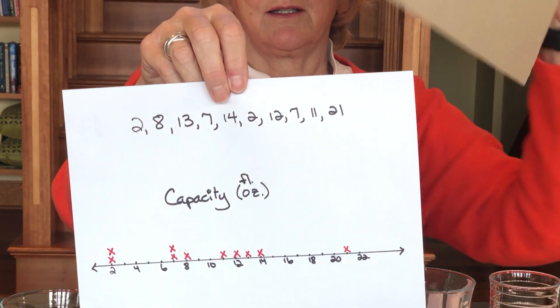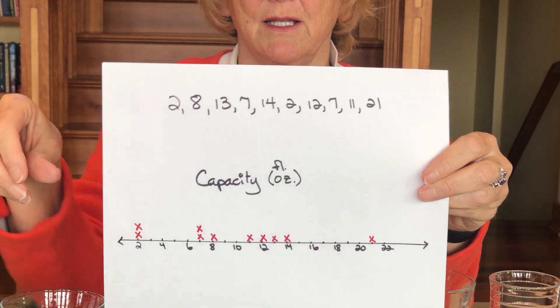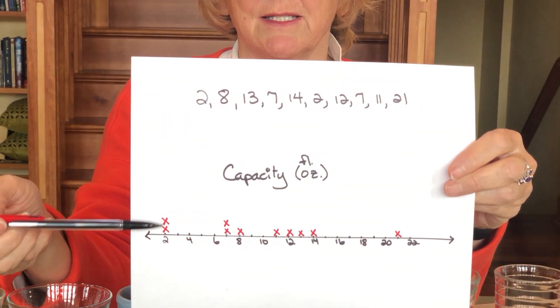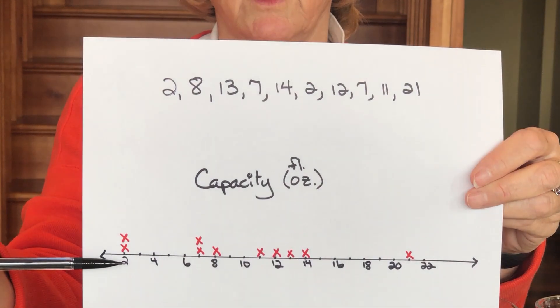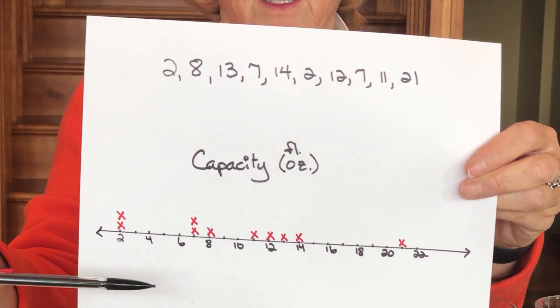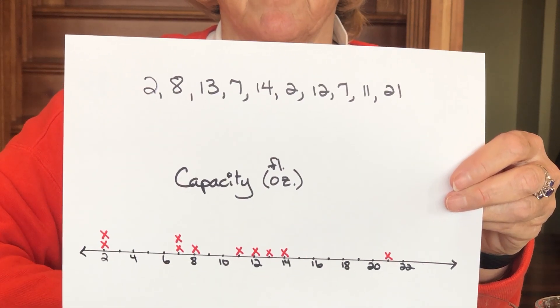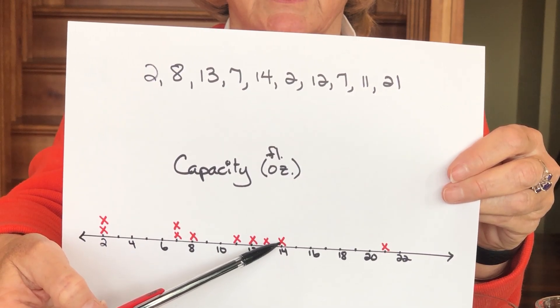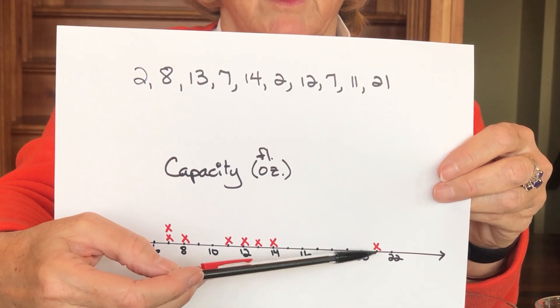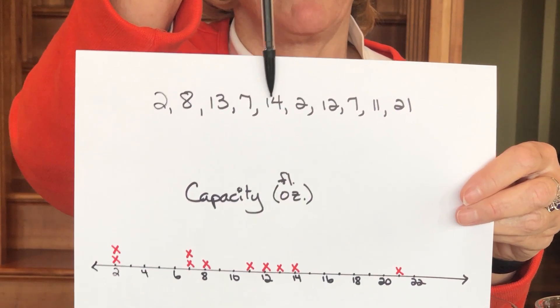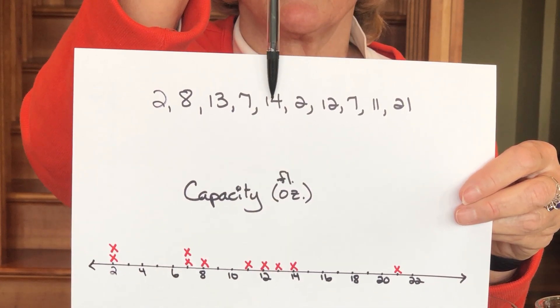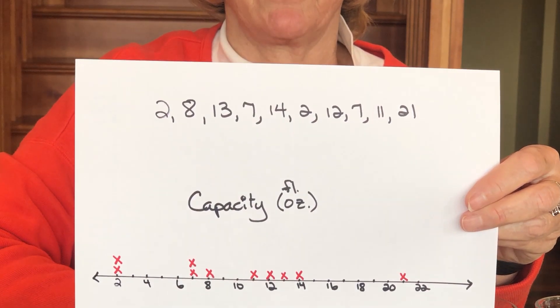I can still make a line plot, and here's my line plot for capacity. Notice that two glasses had the same capacity — a liquid volume of two fluid ounces — and one had a capacity of 21 fluid ounces. The glass at 14 fluid ounces was actually right in the middle in terms of height, so it has a volume greater than the 21-centimeter-tall wine glass even though it's about half its height. This shows how height and capacity can be very different attributes.